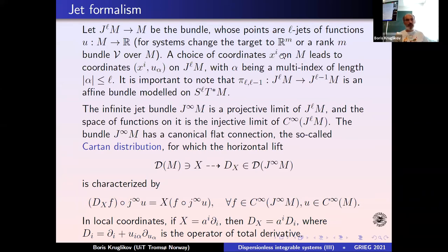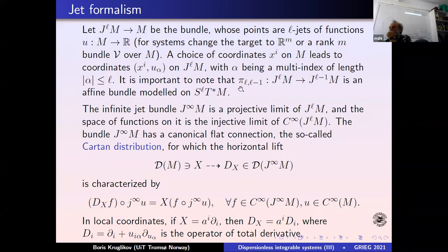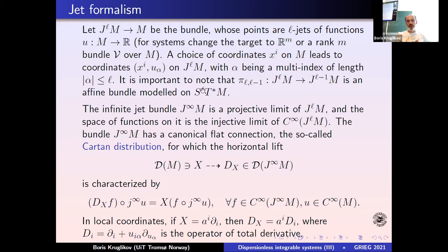A choice of coordinates x₁ to xd gives coordinates on your space, where these are base coordinates, and these will be the kind of coefficients of Taylor expansion or partial derivatives corresponding to a point. So these will be coordinates of jets of maps from M to each other. Alpha is a multi-index of non-negative numbers up to d, where d is the dimension of manifold M. It's important to note that the projection from the l-jet to the (l-1)-jet is an affine bundle modeled on the l-th symmetric power of the cotangent space.